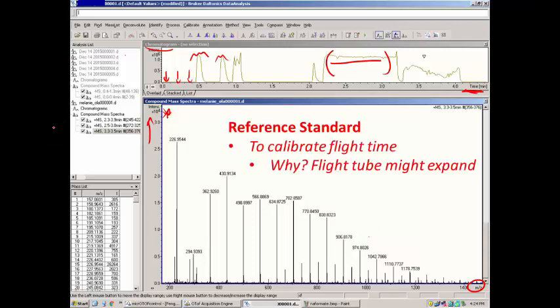The first sample that we're going to be recording is a reference standard. So this is something that we are using to calibrate the flight time of the instrument. In other words, these are compounds that we know what the mass is, and by spraying these compounds into the instrument, depending when they're detected, we get an accurate calibration of the instrument.